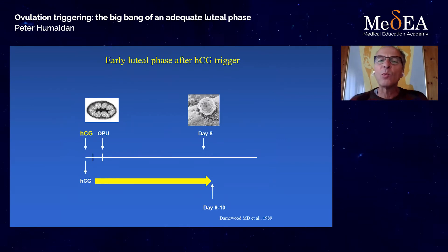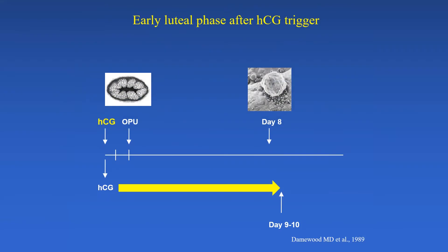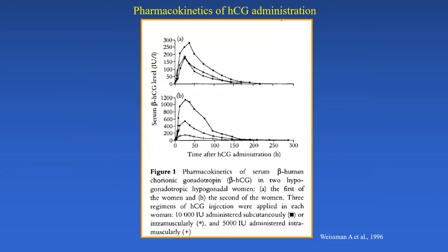Ideally, with an HCG trigger, the LH activity is around until day 8, which is the time of implantation. So the HCG trigger would cover all this phase until the embryo itself starts producing HCG, which will then support the corpus luteum. But we have to ask ourselves — is this actually true? And it's not.